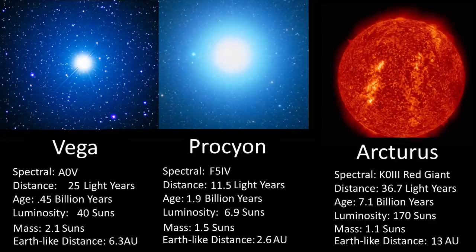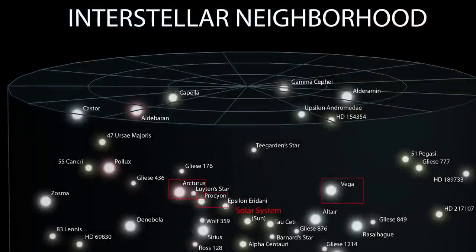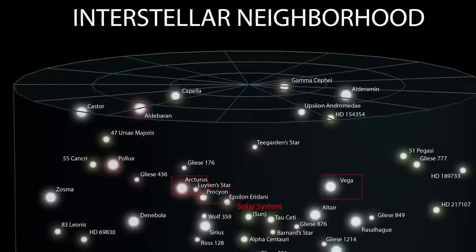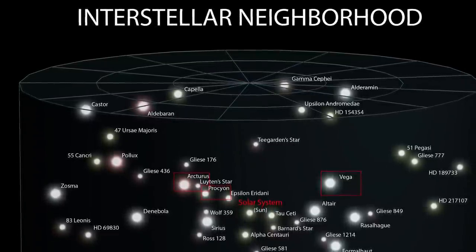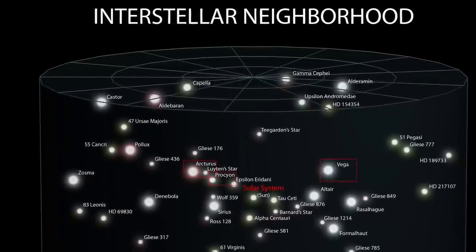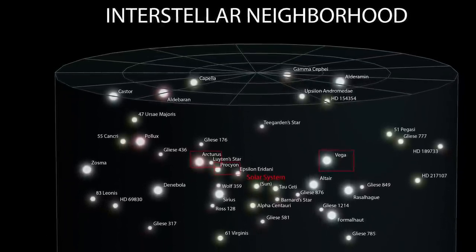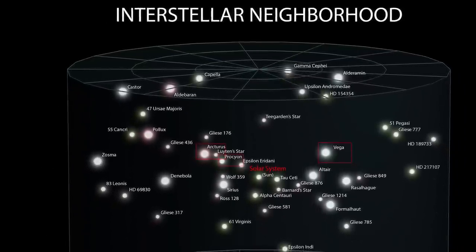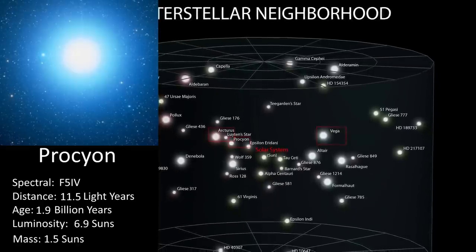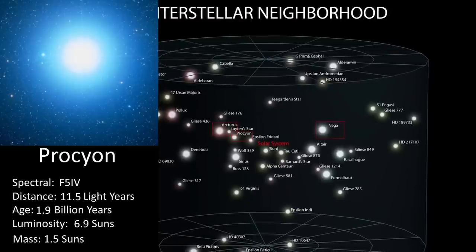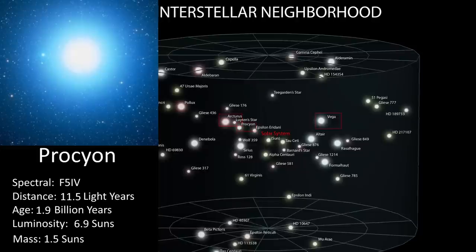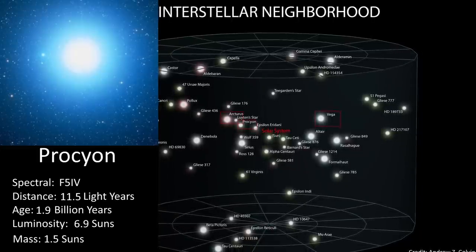Procyon is just 11.5 light years away, one of the 53 star systems and 78 known stars, some being binary, within 5 parsecs or 16.3 light years that we designate as our neighboring stars and first colonial targets. 50 of those are red dwarfs, 11 are known brown dwarfs, and there are probably more, and these are also interesting colonial targets we were looking at more in exostellar civilizations. Four are white dwarfs, and only a dozen others are larger stars. Procyon is a star just leaving the main sequence and entering this sub-giant phase, and it also has one of those white dwarf stars too, Procyon B as a companion.